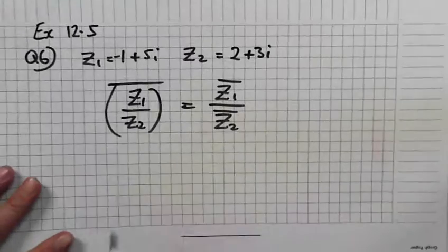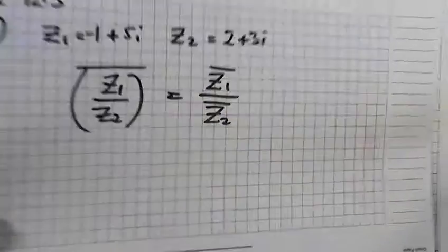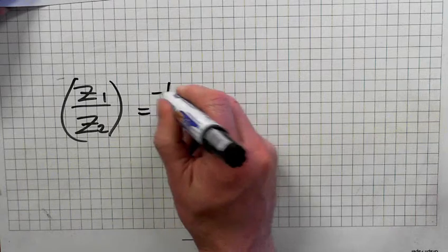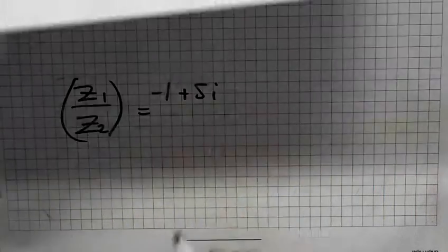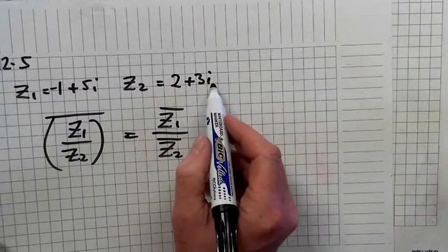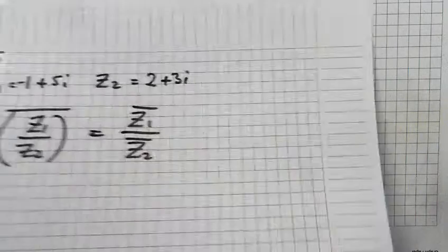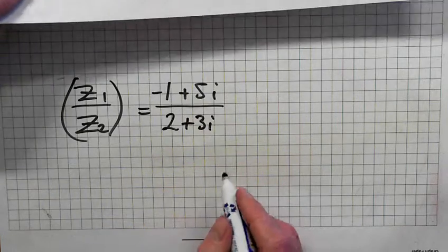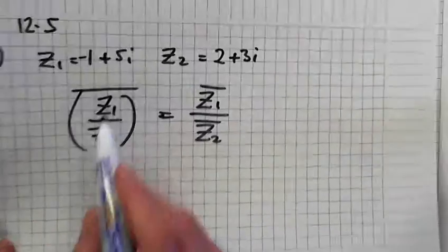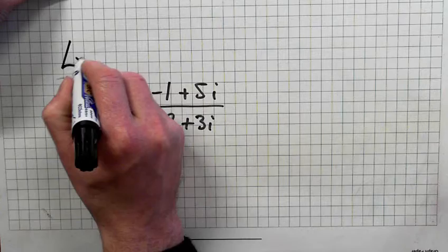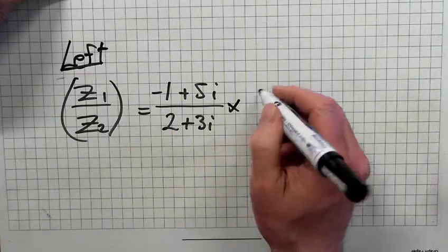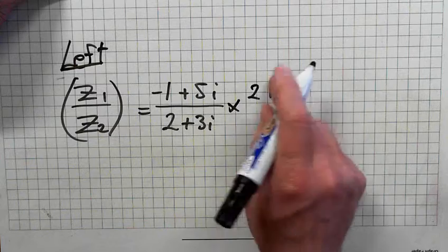Alright, so Z1 again is minus 1 plus 5i, and Z2 is 2 plus 3i. Just look up. Remember we're just doing the left hand side of the sum here. So I'm going to multiply top and bottom by 2 minus 3i.